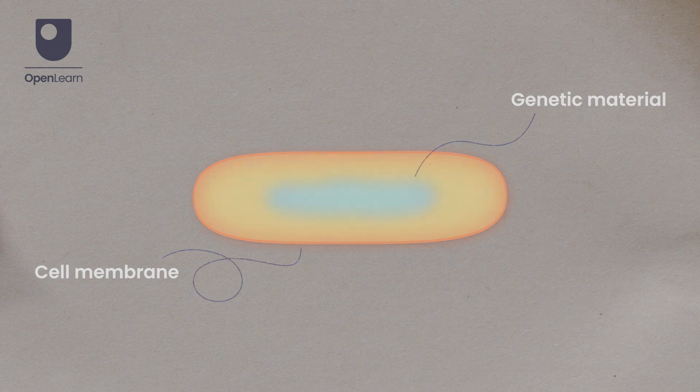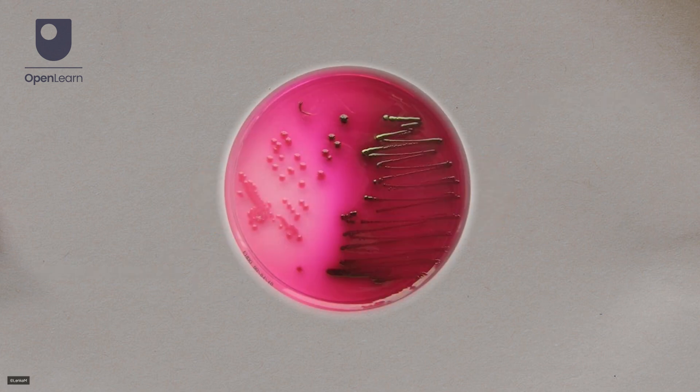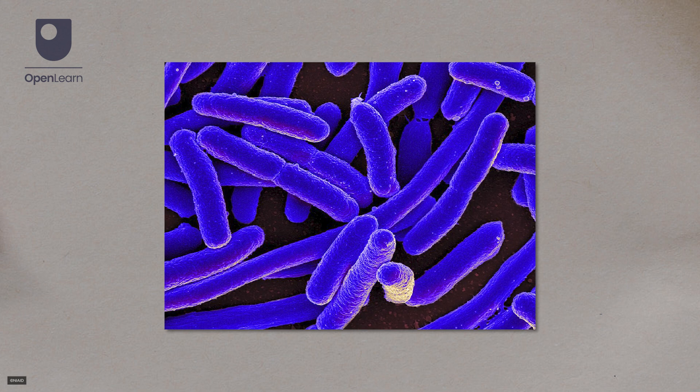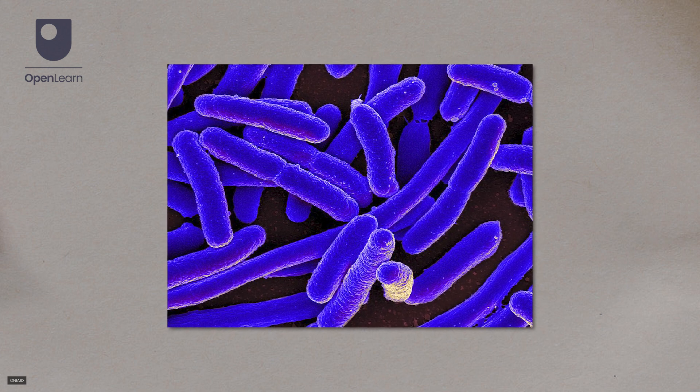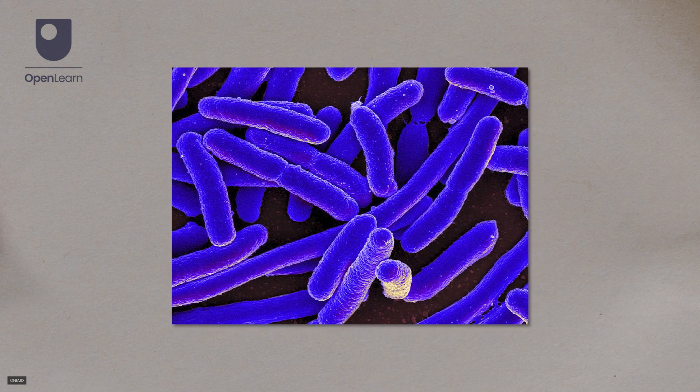On the other hand, prokaryotic cells do not have separate compartments. DNA is loose within the gel-like cytosol. Bacteria and archaea, single-celled and microscopic organisms that make up the majority of life on Earth, all have prokaryotic cells.